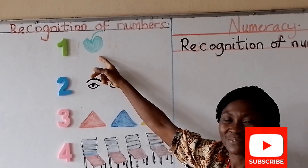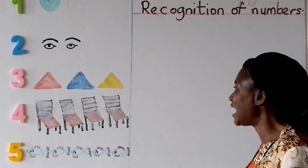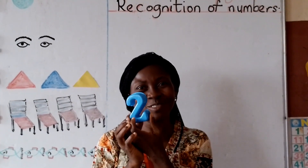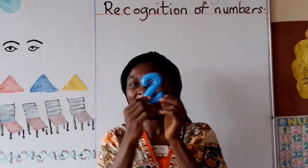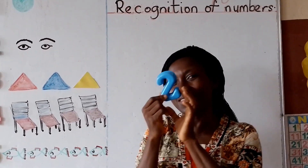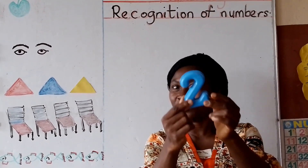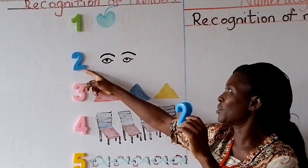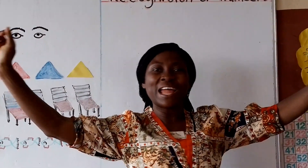Now we go to number two. I'm singing two — what is two? Two is the number twice of a thing. Number two. I have two eyes, two ears, two hands and two legs.